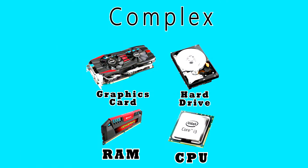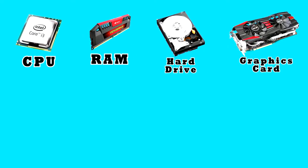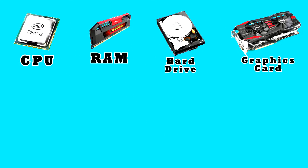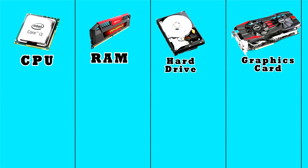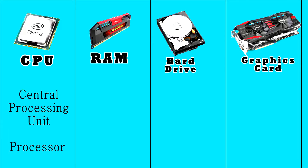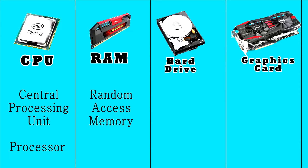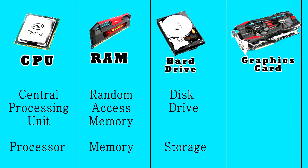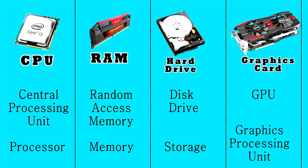Now let's move on to the more complex parts. The four main components are CPU, RAM, hard drive, and graphics card. Keep in mind that CPU stands for Central Processing Unit. RAM stands for Random Access Memory, and is often referred to as just memory. A hard drive is often referred to as a disk drive or storage. And a graphics card is also known as a GPU, or Graphics Processing Unit.